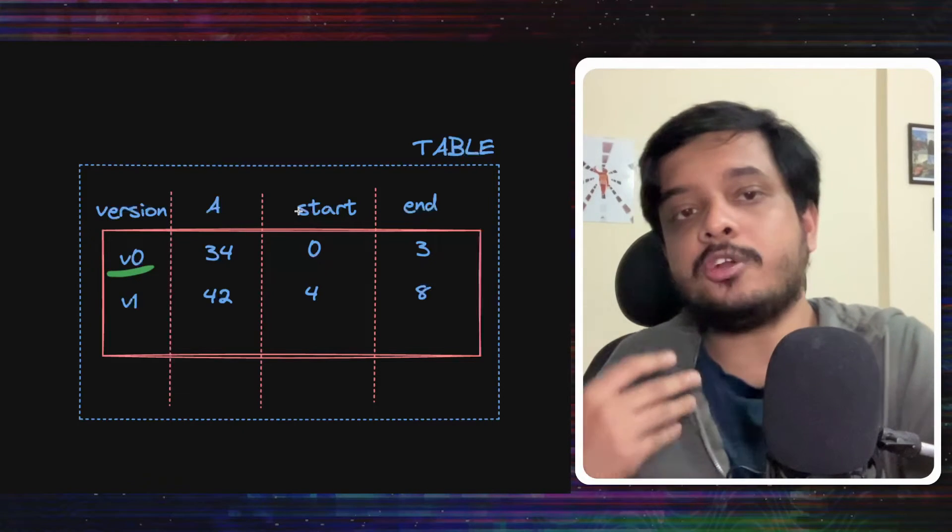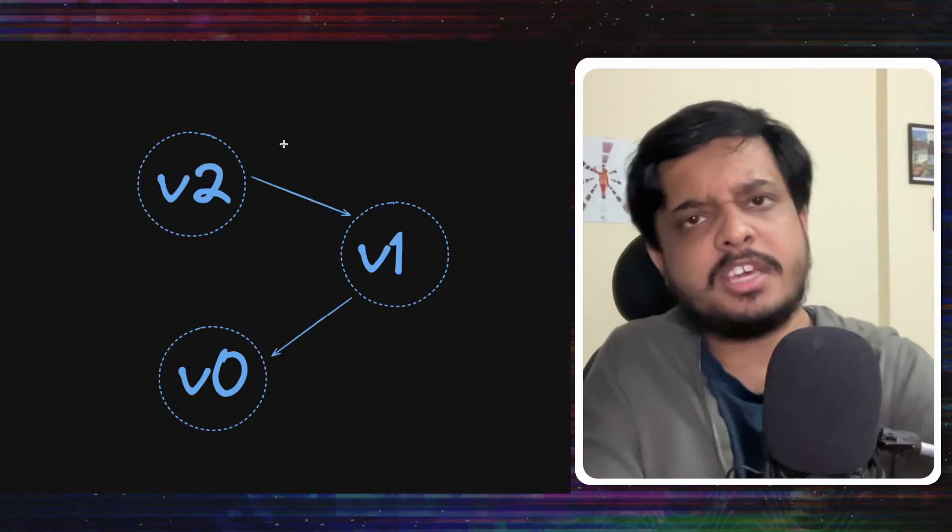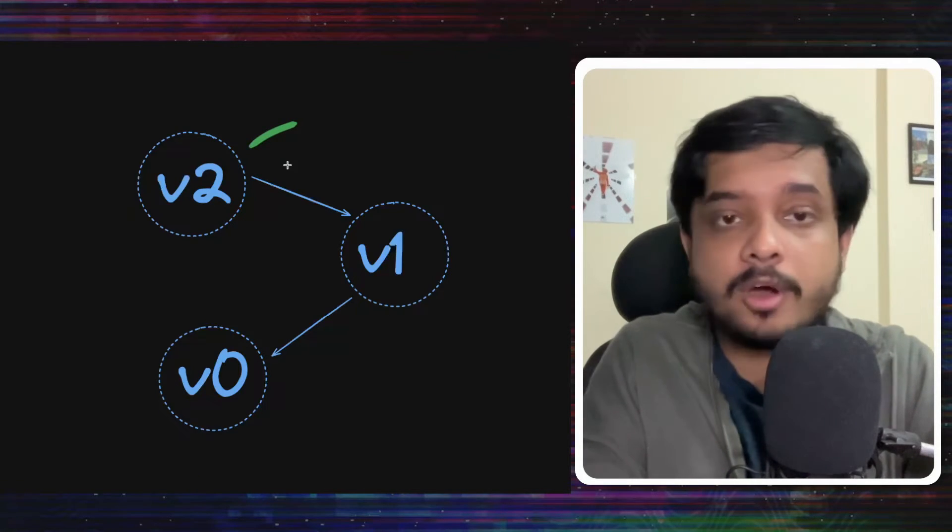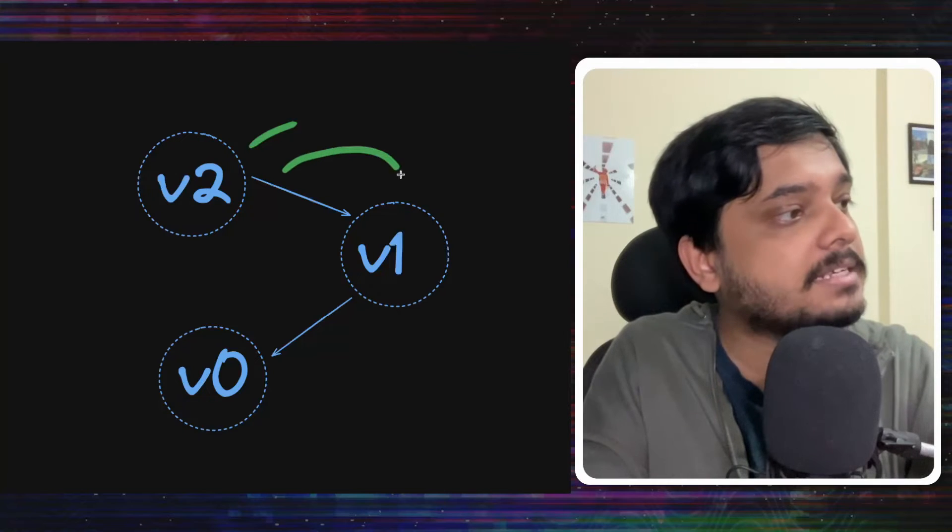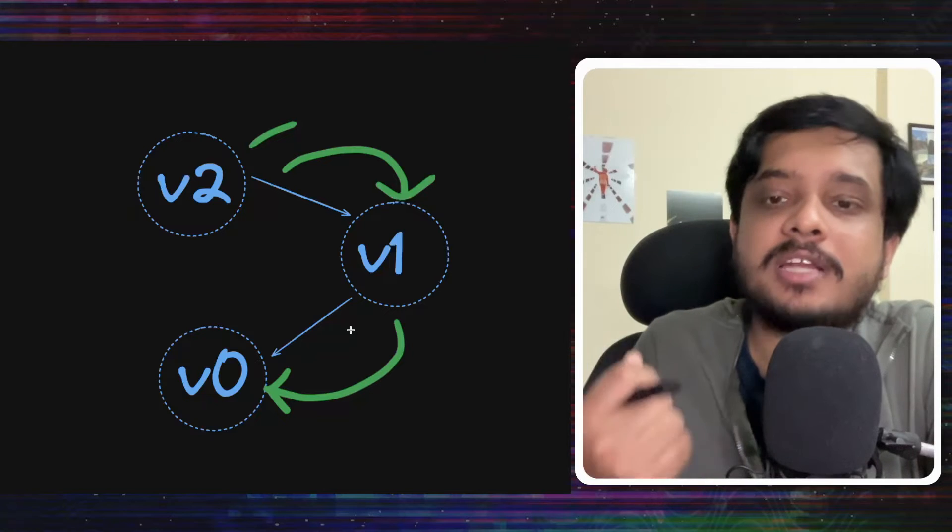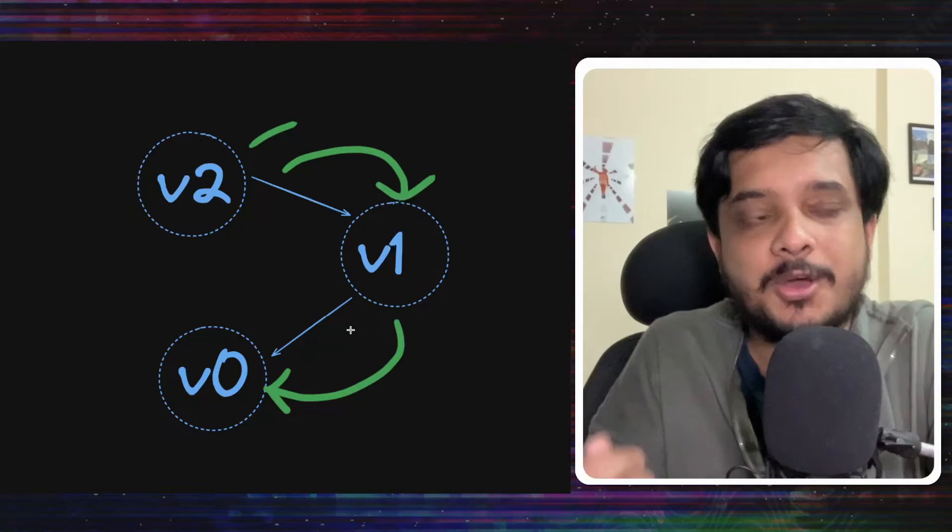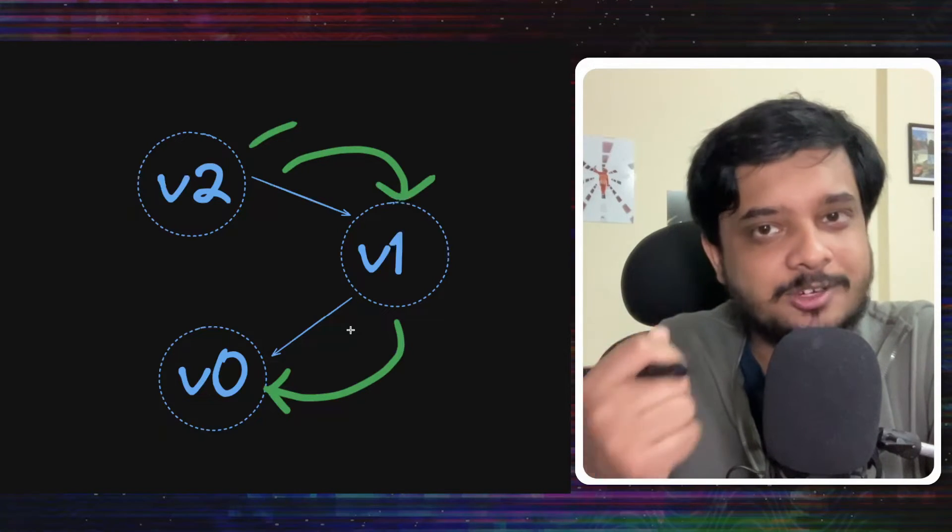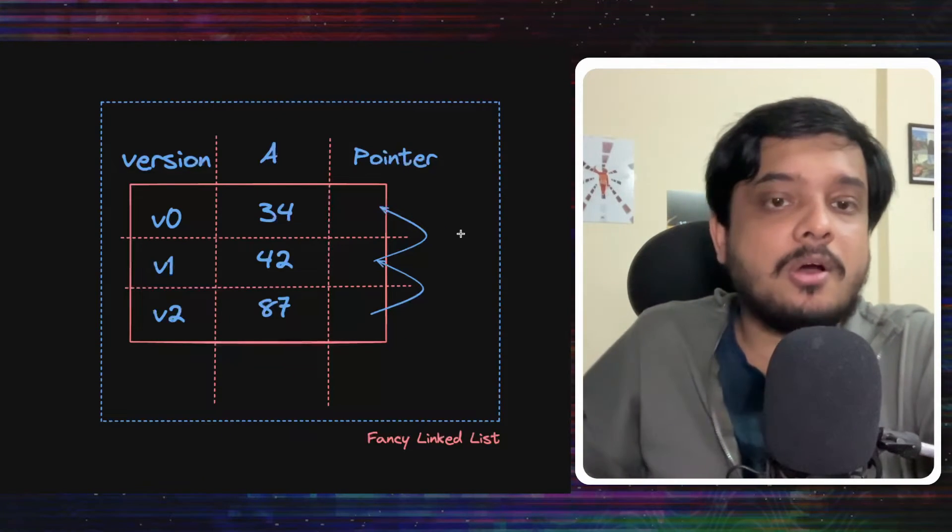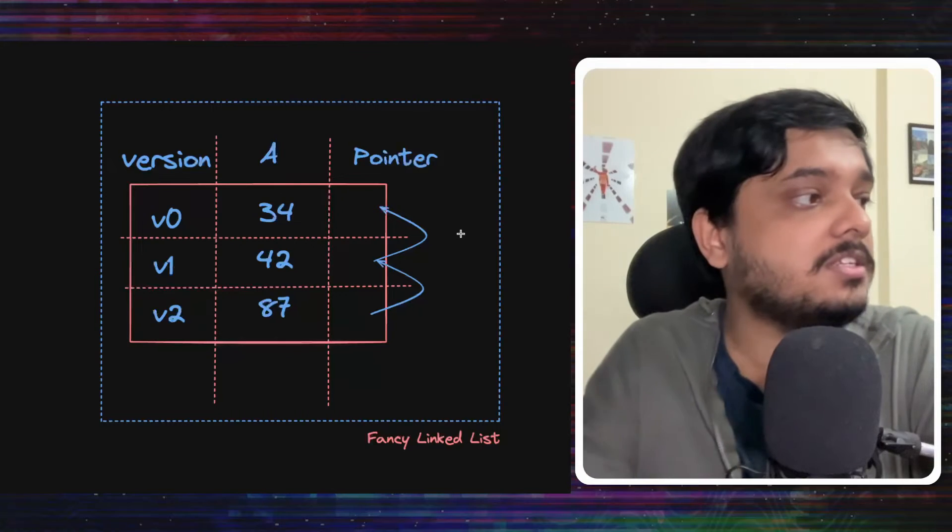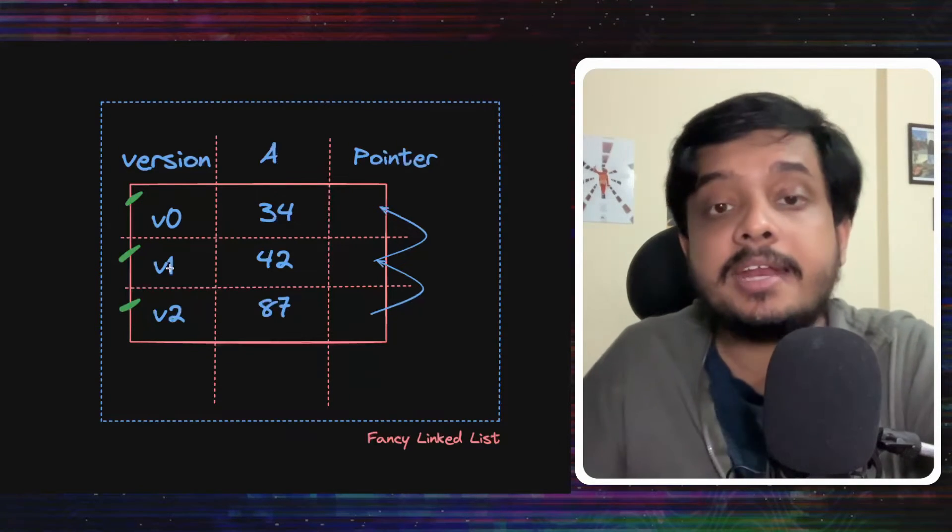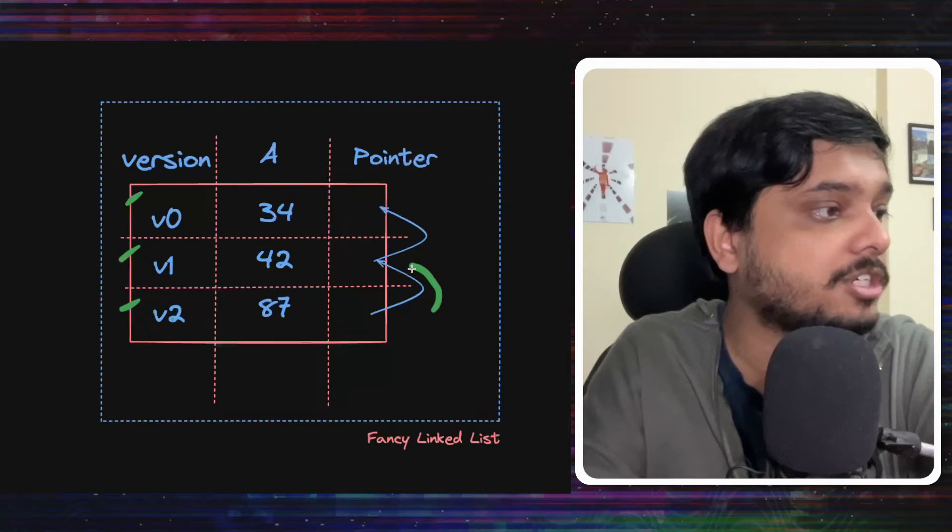Now that you get the basic concept of MVCC, let's see what strategies can be there to actually store this version data. Here's the requirement. We have the latest version which we can easily access and from there, we can go and access the version before that. It kind of forms like a chain, a version chain. Which data structure does it remind you of? Well, linked list, obviously. So, the first idea to store the data is simple.